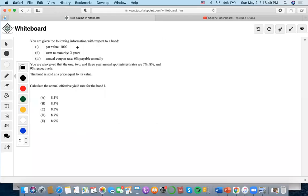Okay, so for this one, same scenario as the last question. They gave us the spot rates, bond sold at a price equal to its value. Calculate the annual effective yield rate for the bond.